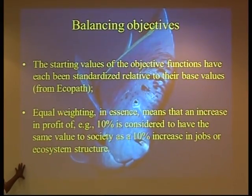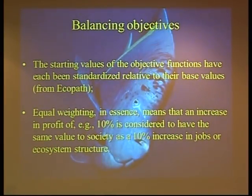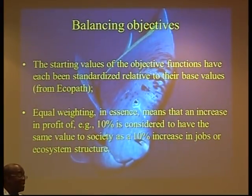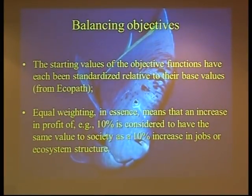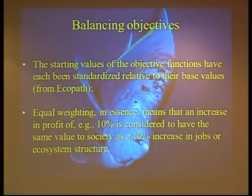This is the very tough part. Because it's putting a weight on things — how do you count a job as a dollar? That is a challenge. Maybe a job in dollars is easier to estimate, but rebuilding ecosystem structure in dollars is very hard. When you put equal weighting, you are saying that losing 10% of your ecosystem structure is equivalent to losing 10% of your profit — which is a huge assumption. So if you know your own reasons, you can adjust it.